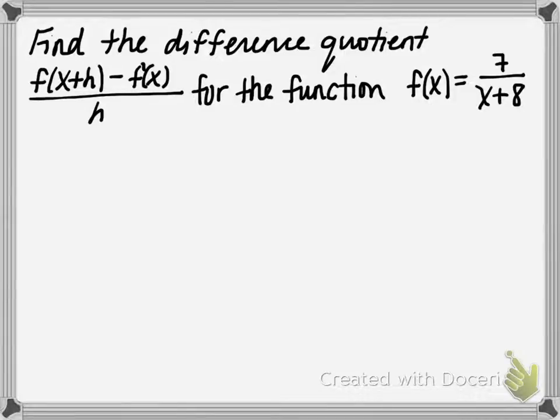Find the difference quotient — f of x plus h minus f of x, all divided by h — for the function f of x equals 7 divided by x plus 8.